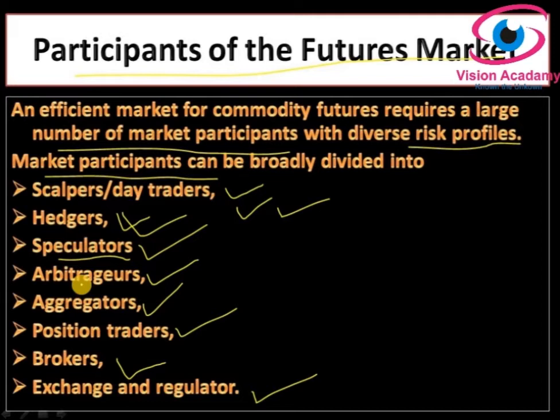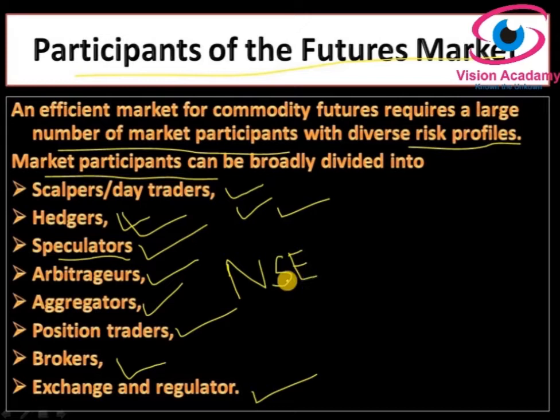Arbitrators are traders who buy and sell to make money on price differentials across different markets. For example, if a stock is listed on both NSE and BSE, an arbitrator would buy from NSE and sell at BSE to take advantage of minor price discrepancies. The role of aggregators is to bring liquidity to the futures market and help farmers benefit from price discovery and price risk management.